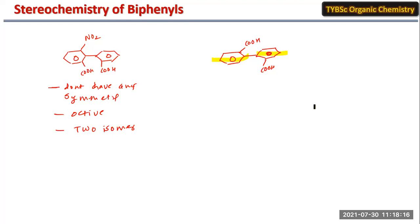From these different types of examples you can understand the stereochemistry of biphenyl systems.